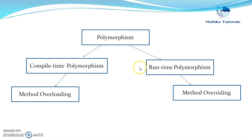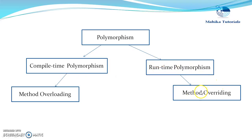Polymorphism can be either compile-time polymorphism or runtime polymorphism. Compile-time polymorphism takes place when the method call and the method to be called are bound at the time of compilation itself, whereas in runtime polymorphism they are bound at the time of execution. Method overloading is an example of compile-time polymorphism, whereas method overriding, which we will see later, is an example of runtime polymorphism.